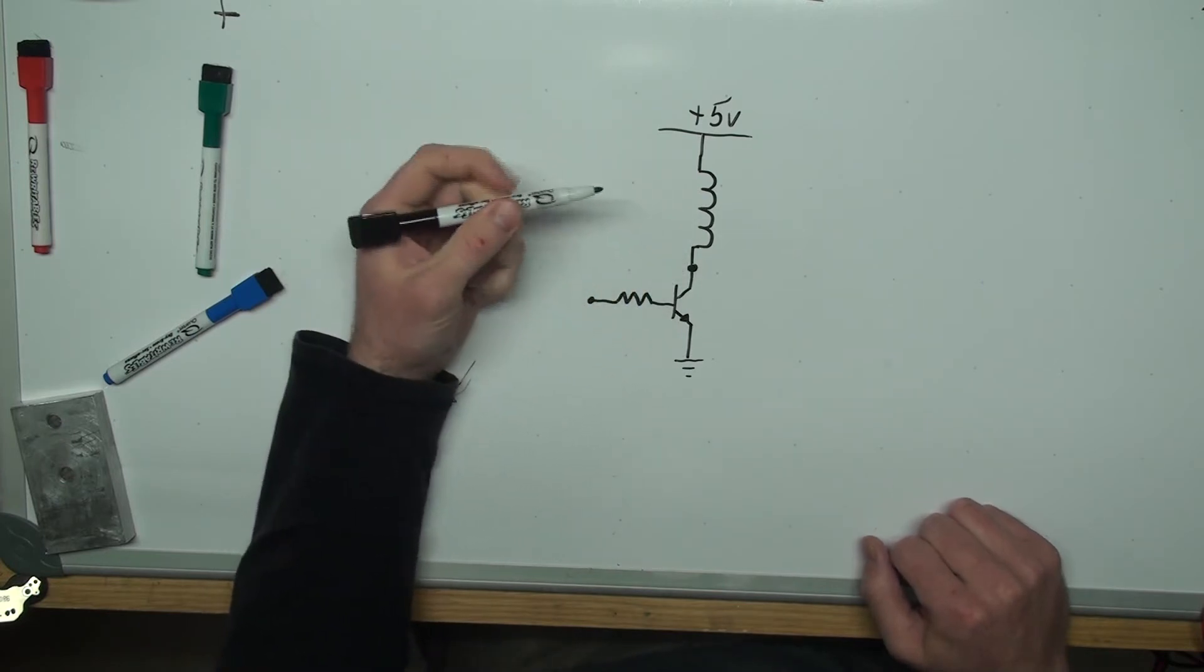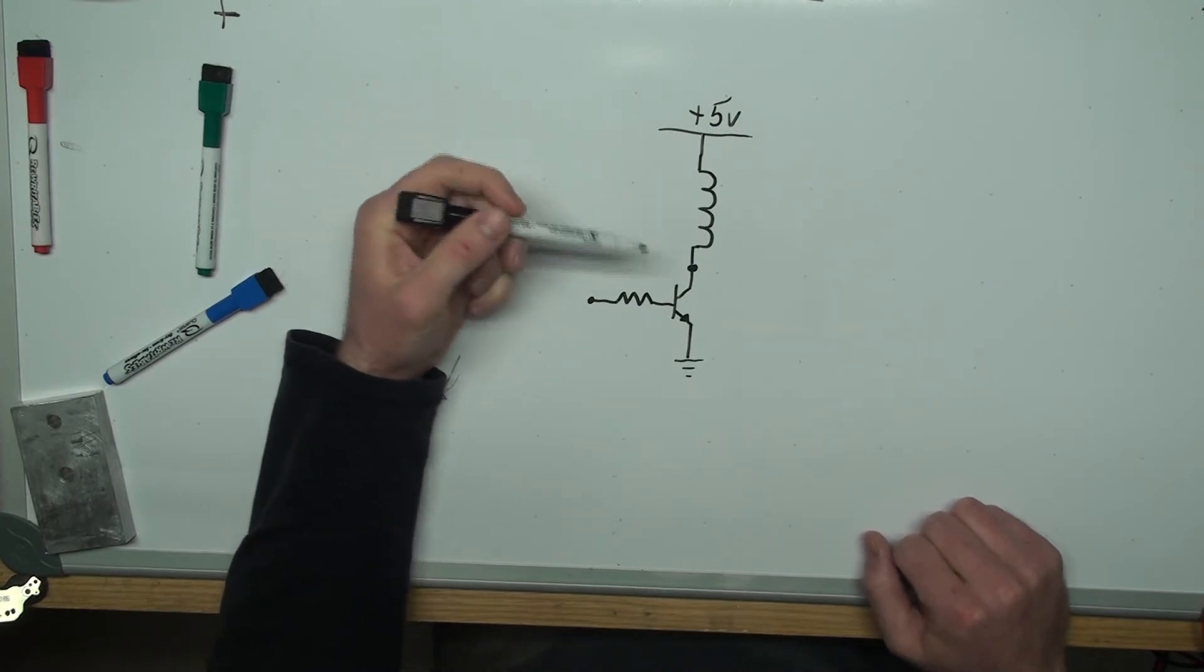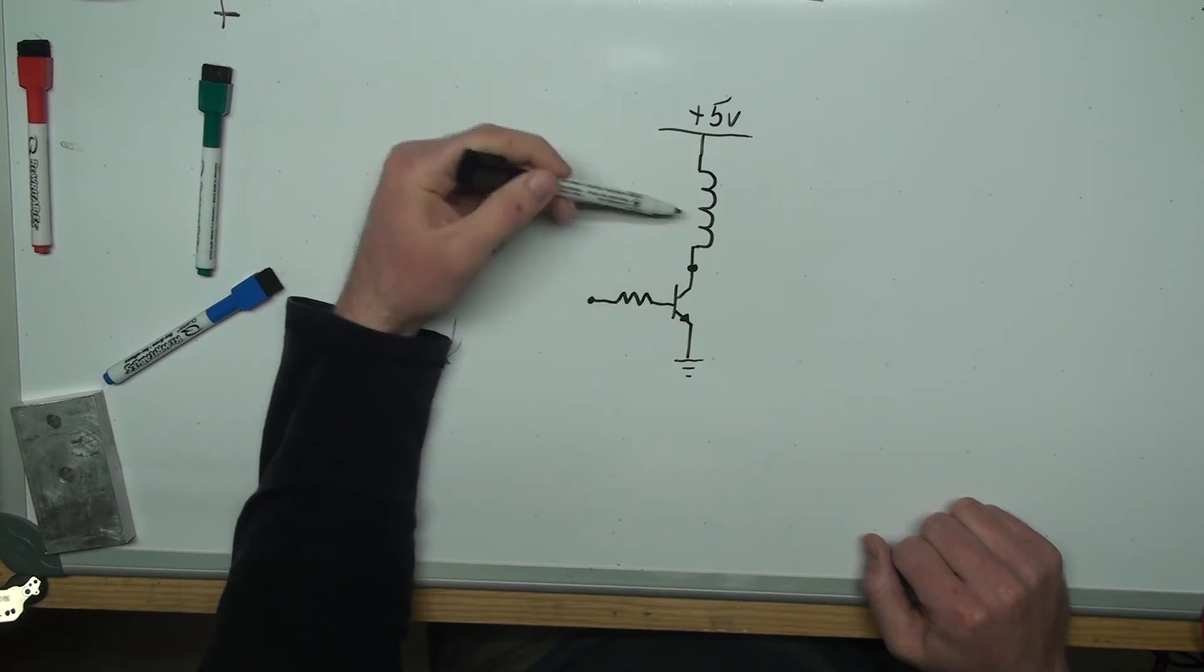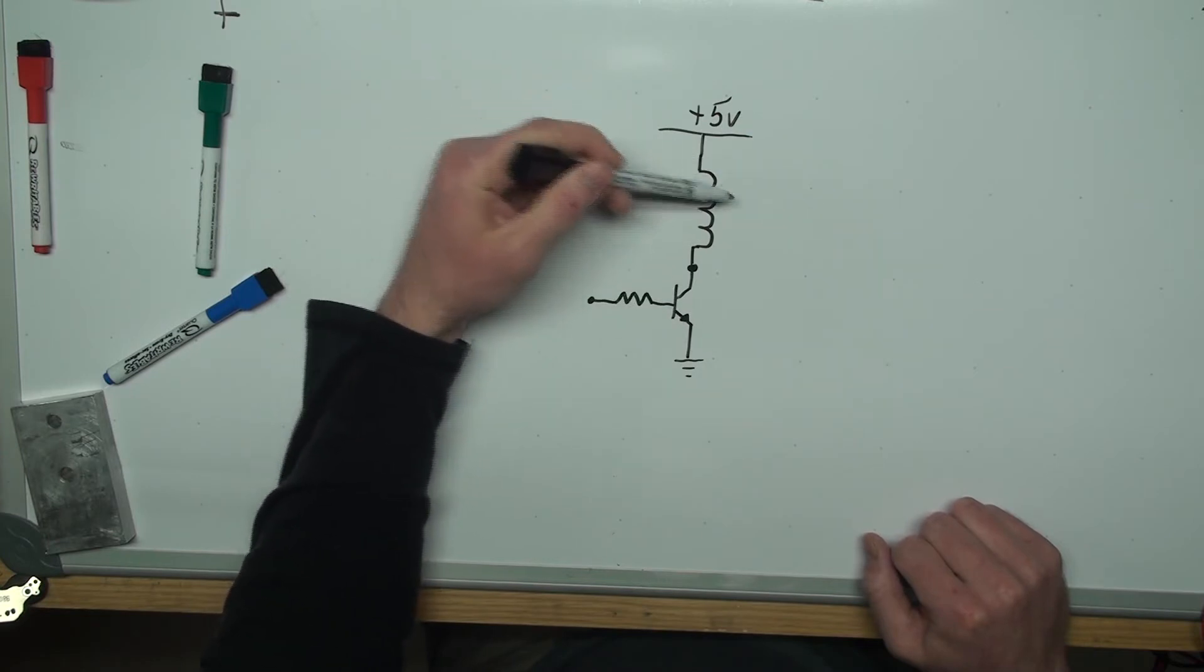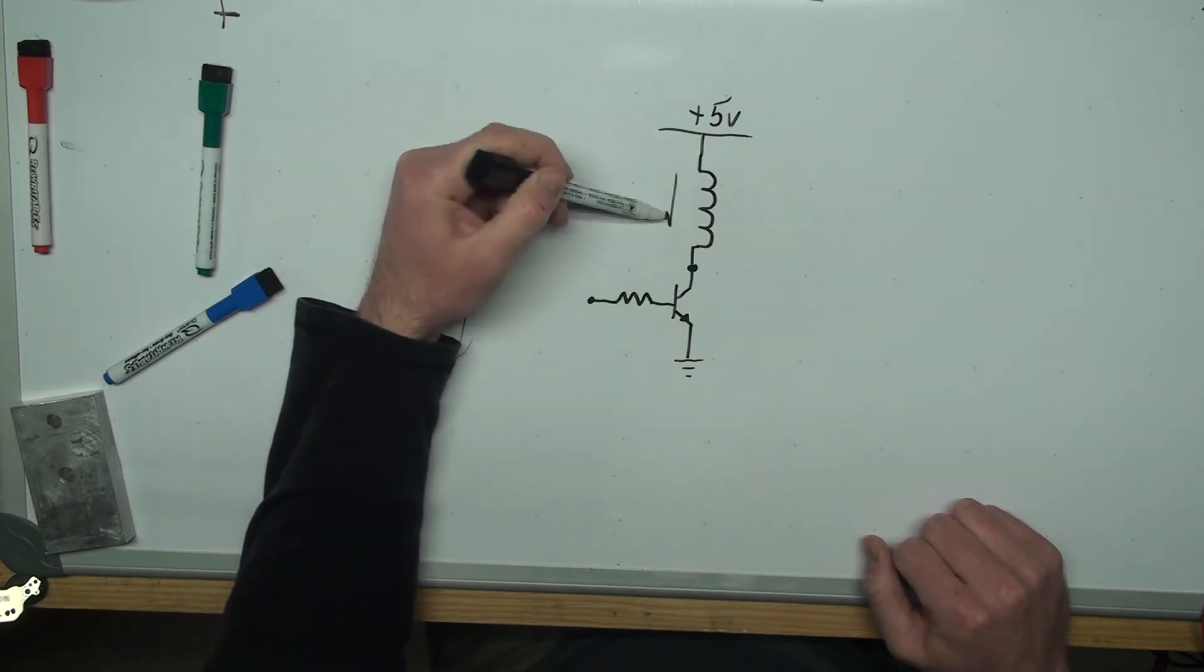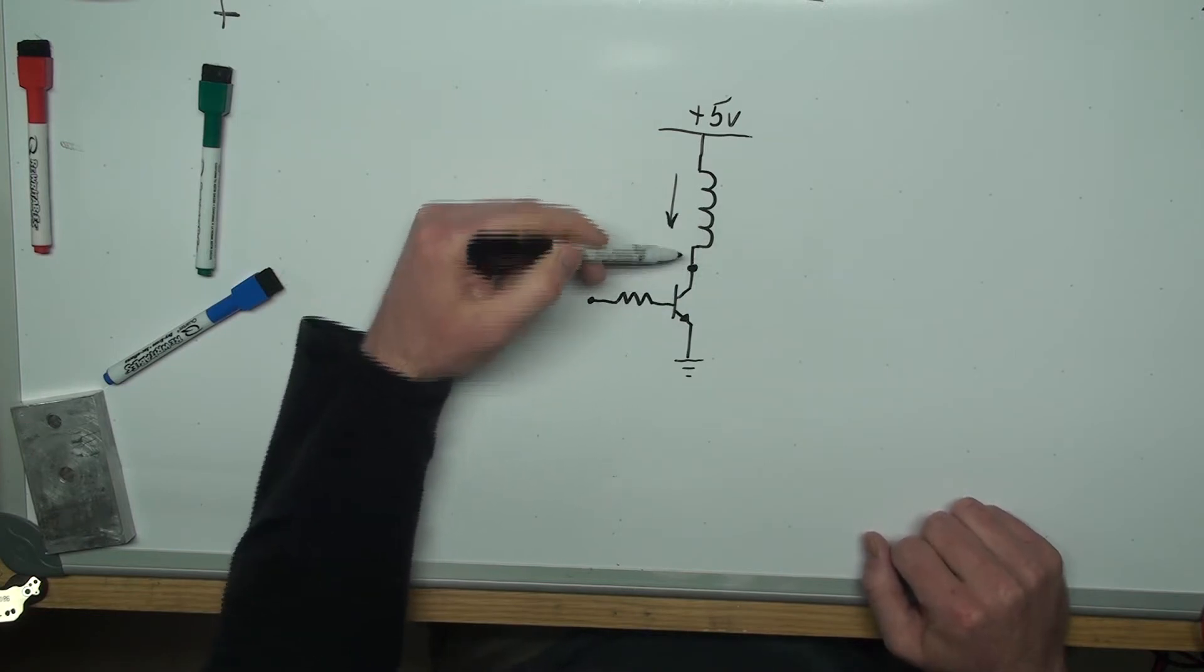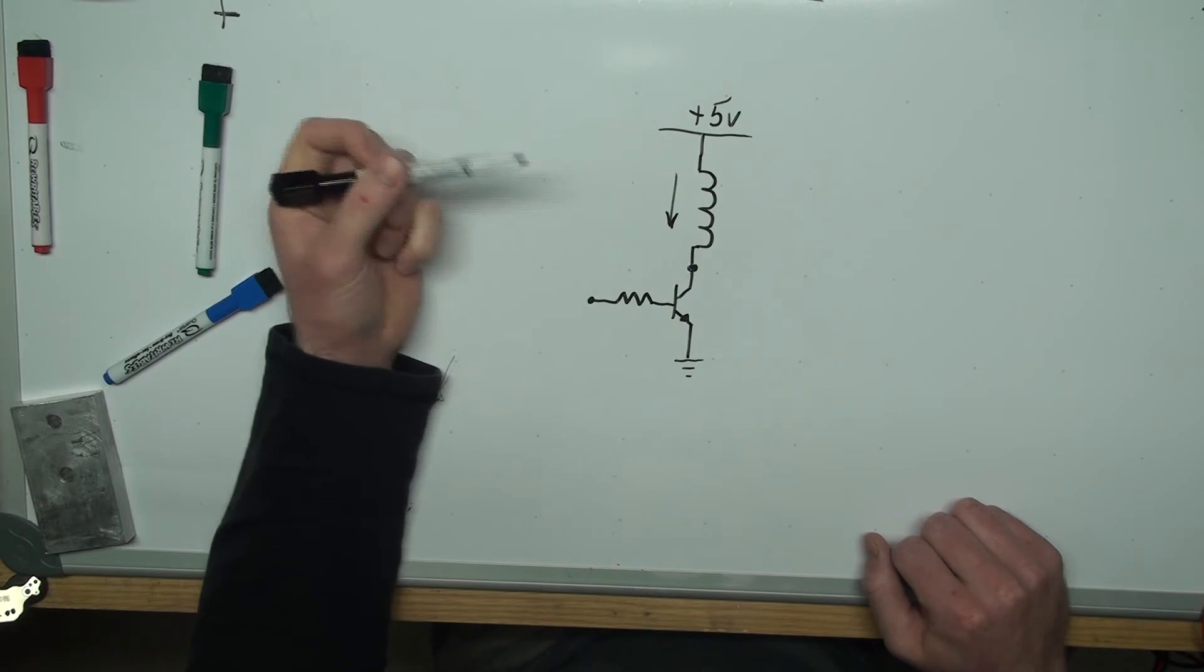I know I've run into it plenty of times before I knew this. When the transistor turns on and allows current flow in this direction, this inductor will build up a magnetic field such that when the transistor is turned off, and it'll turn off very rapidly, a large voltage will be generated at this point.